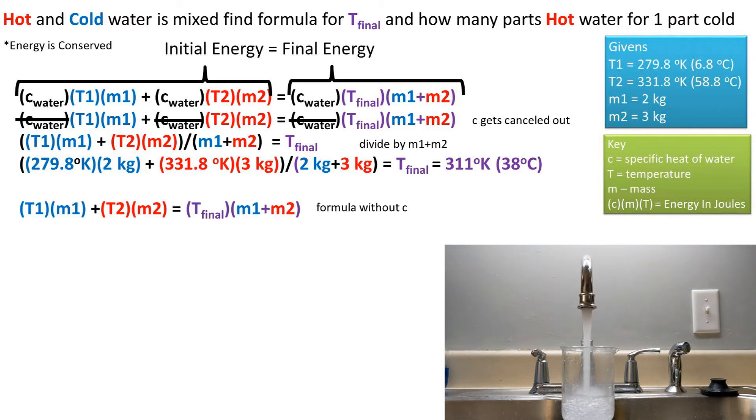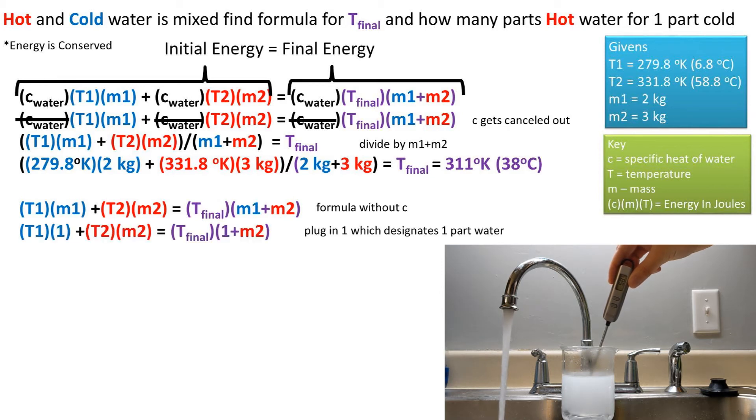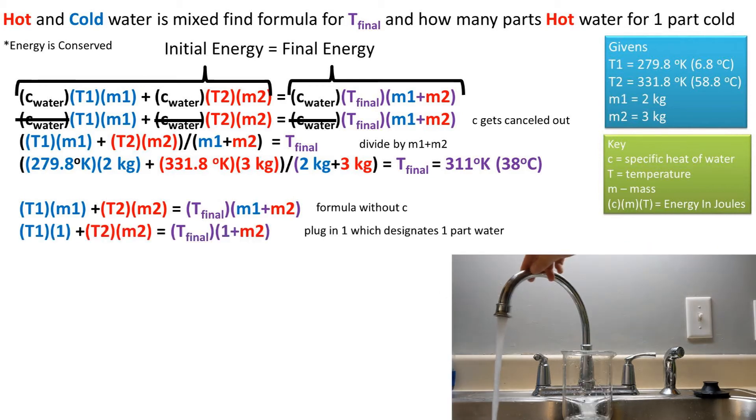Now we want to find the formula for how many parts of hot water are needed for one part of cold water. We will start with the energy formula without the specific heat of water. Then we'll plug in 1 for where the cold water mass is, which designates it as one part of cold water, and we want to work to get m2 to one side of this equation.